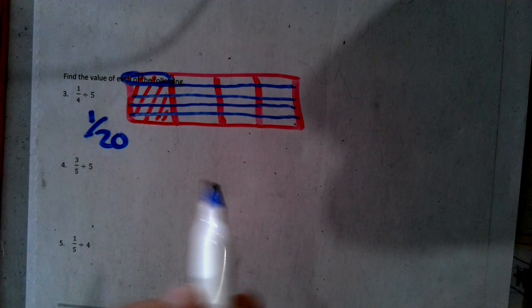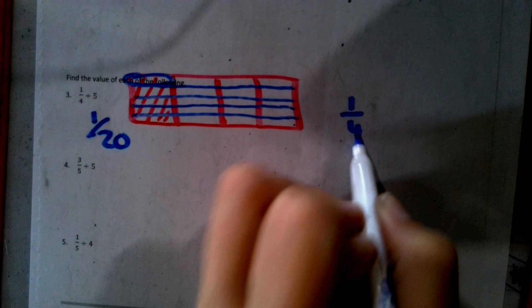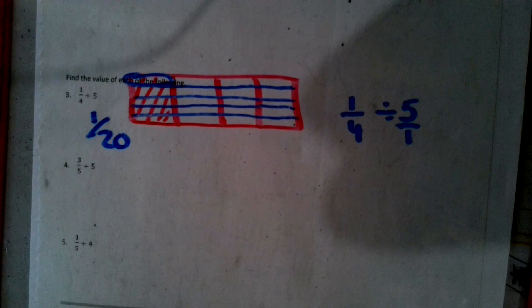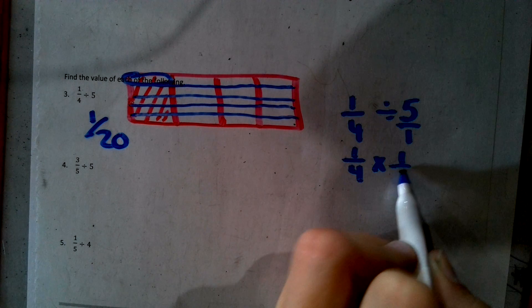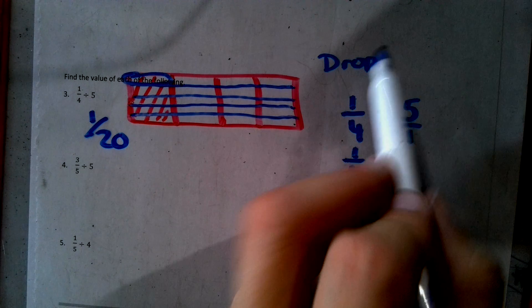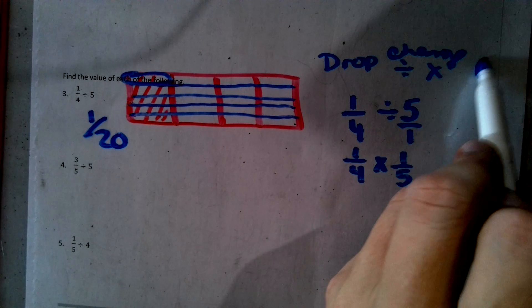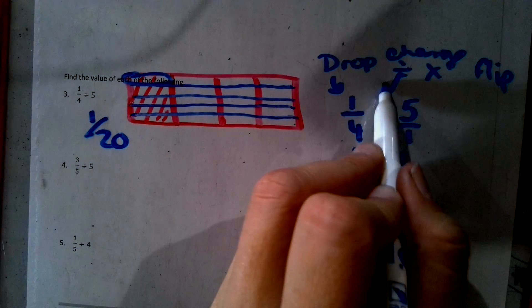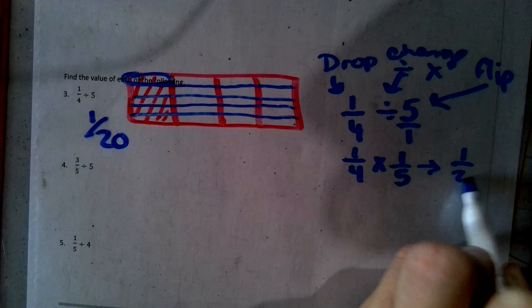So one twentieth is how we have a section. So now if we do a standard algorithm, we have 1/4 divided by five, which we put over a one. We do a thing called drop, change, flip. So we drop the first fraction. We change the division sign to a times sign. And we flip that other fraction over. So we drop, we change, we flip. And now we go straight across like we happen. One twentieth.